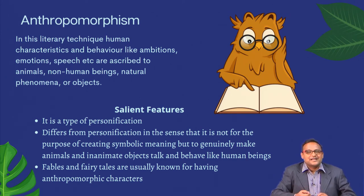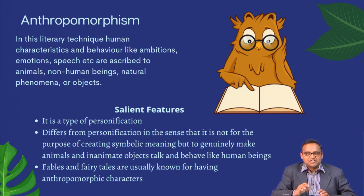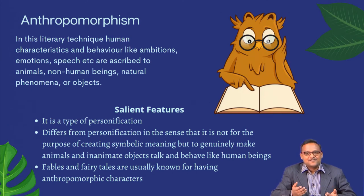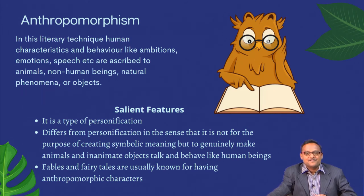But in anthropomorphism, these animals and characters are literally attributed the qualities of human beings. Here is a bird reading a book — reading is the quality of human beings. Tom and Jerry is a perfect example of anthropomorphism: they mimic human beings perfectly. This technique is an extended version of personification — while personification is limited to figurative language, here they literally talk, speak, and behave like human beings. Fables and fairy tales are well known for making use of anthropomorphic characters.